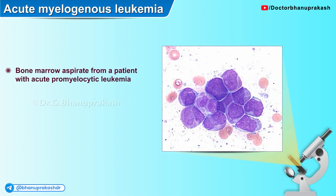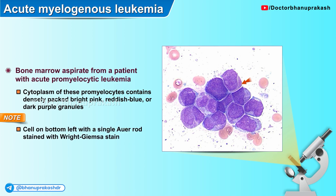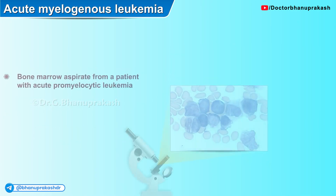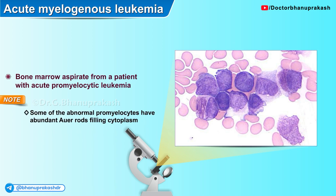Here is a bone marrow aspirate from a patient with acute promyelocytic leukemia. The cytoplasm of these promyelocytes contains densely packed bright pinkish, sometimes reddish-blue or dark purple granules. Note that the cell on the bottom left has a single Auer rod. In another bone marrow aspirate from an APL patient, some of the abnormal promyelocytes have abundant Auer rods filling the entire cytoplasm.